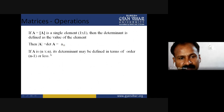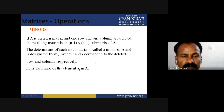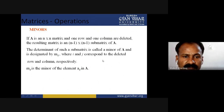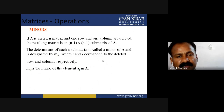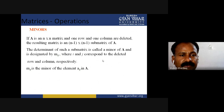If A is n by n, its determinant may be defined in terms of order n minus one or less. This is all about the determinant and how we are going to calculate it. We will see later on and the properties related to the determinant. Before starting a determinant in more detail, we are going to study the topic minors.